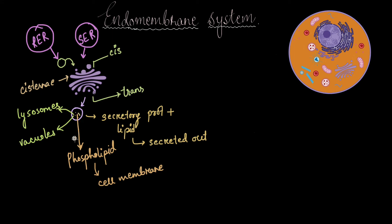The RER is found more in protein-secreting cells and the SER in lipid-secreting cells, but the Golgi body is important for both, so it is found in all kinds of cells. We can call the Golgi the 'post office of the cell' because it receives packages from the endoplasmic reticulum, modifies them, packages them, sorts them into different vesicles, and dispatches them to wherever they need to go. In our future video, we will look at the structure and function of lysosomes and vacuoles.